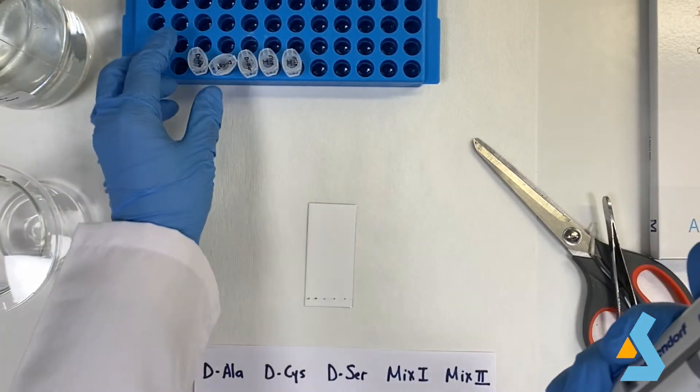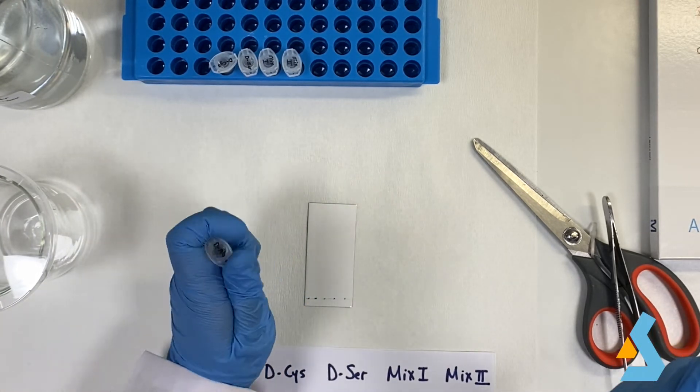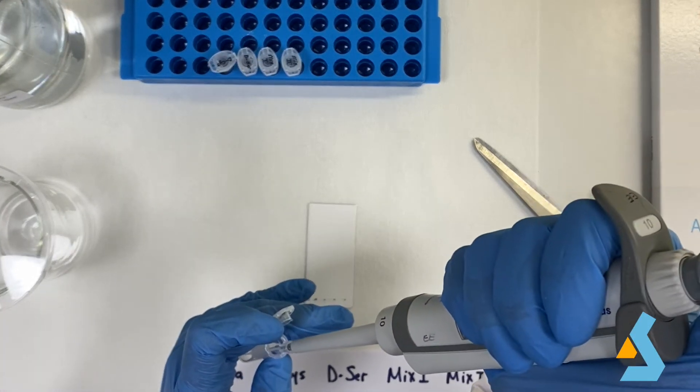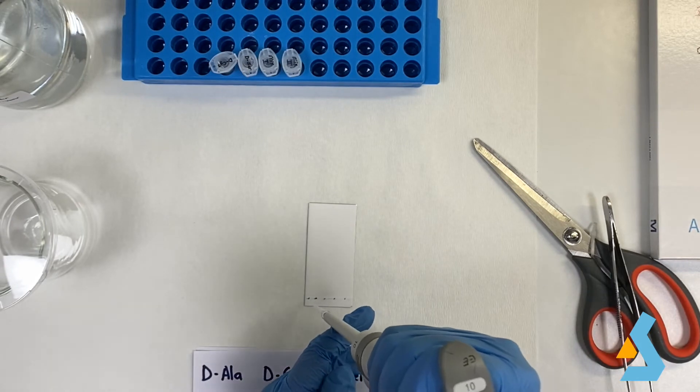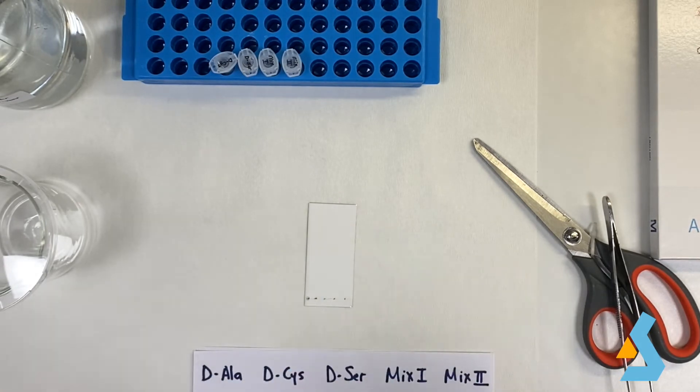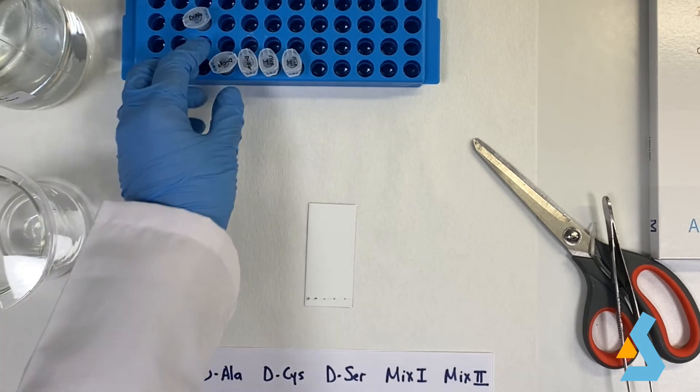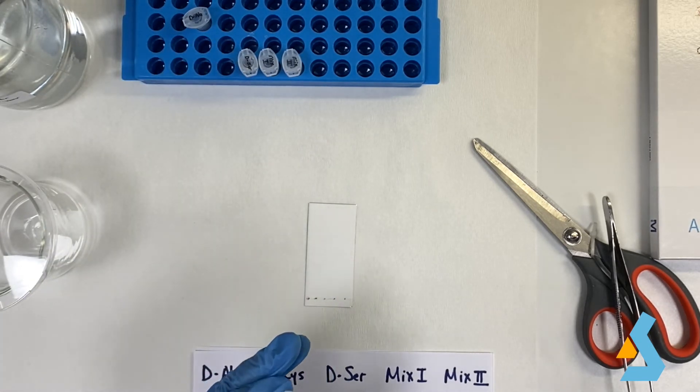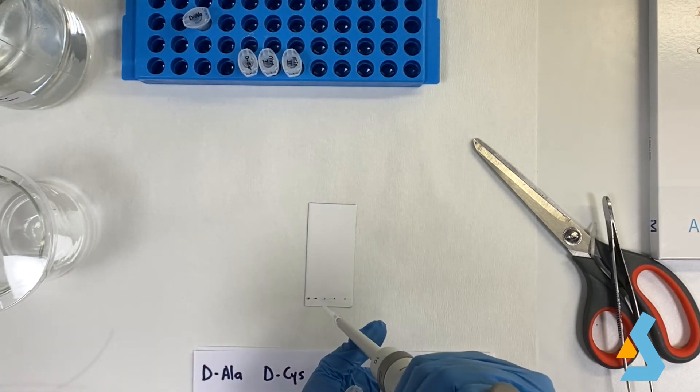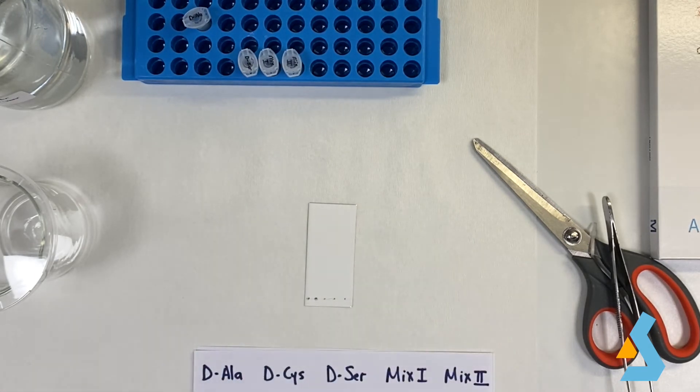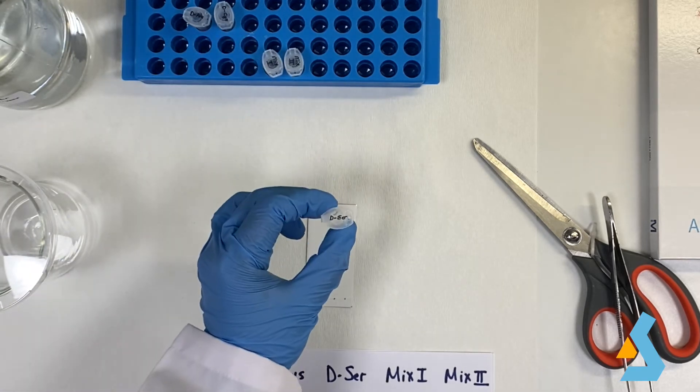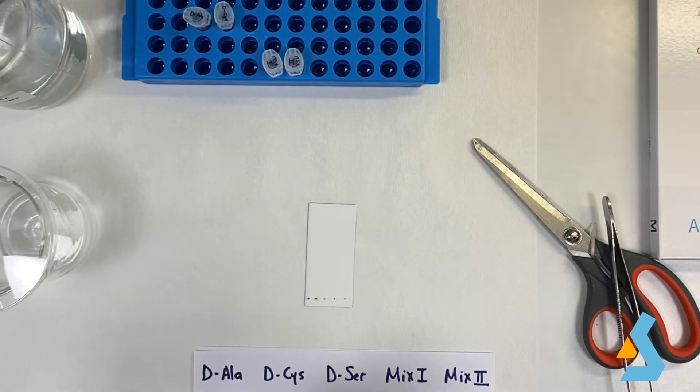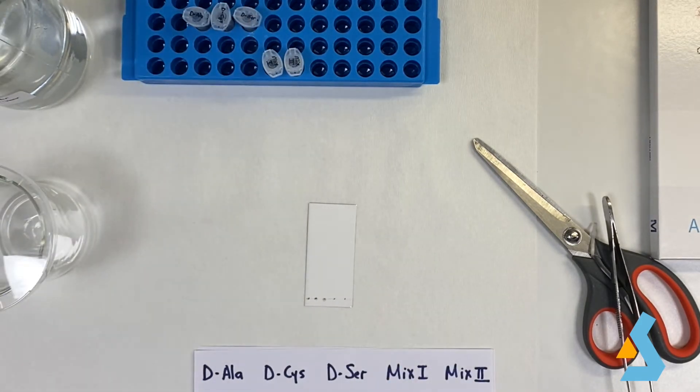In this experiment, we will have five samples. We add one microliter of samples to each spot. The sample solutions all have two milligrams of amino acid per milliliter. The first sample is D-alanine, the second one is D-cysteine, the third one is D-serine, and the rest of the two samples have unknown mixtures with one or two of these D-amino acids. We will identify the content of these unknown mixtures at the end of the video.